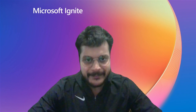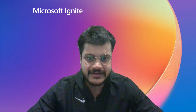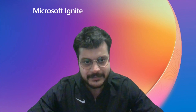Telegraf is an open-source, lightweight, minimal memory footprint agent for collecting, processing, and writing telemetry data, including logs, metrics, and IoT data. Telegraf supports hundreds of input and output plugins and is widely used and well supported by the open-source community. The output plugin serves as a connector from Telegraf and supports ingestion of data from many types of input plugins into your database. It can be leveraged for scenarios such as collection of telemetry from Docker containers, Kubernetes environments, Windows event logs, syslogs, or any supported input plugin to ingest log, metric, and IoT data into KQLDB and extract insights for near real-time analytics dashboards. Telegraf plugin supports both batching and streaming and is based on Go SDK.